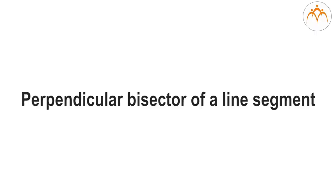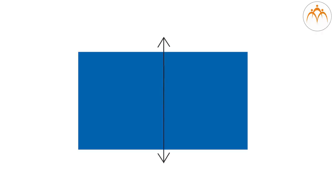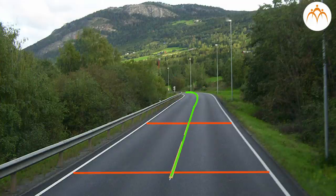Perpendicular bisector of a line segment: a bisector is a ray that divides something into two equal parts. We observe such bisectors all around us — for instance, the road divider, which is constructed to be at an equal distance from both sides of the road. Look at a rope and see how it is divided into two equal parts.